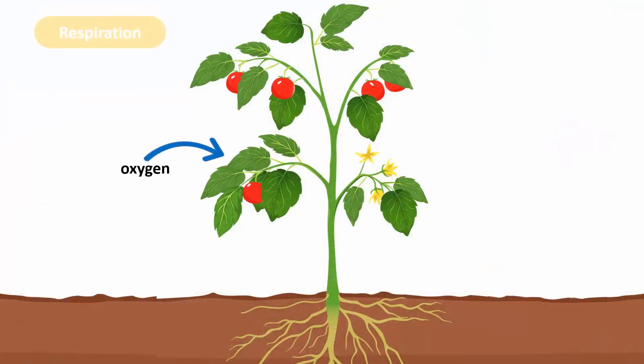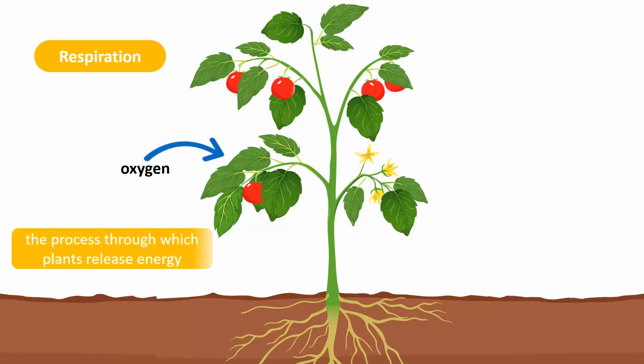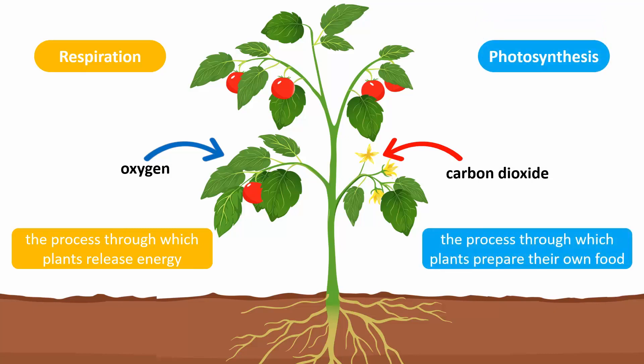Plants need oxygen for respiration, the process through which plants release energy. They also need carbon dioxide for photosynthesis, the process through which they prepare their own food.